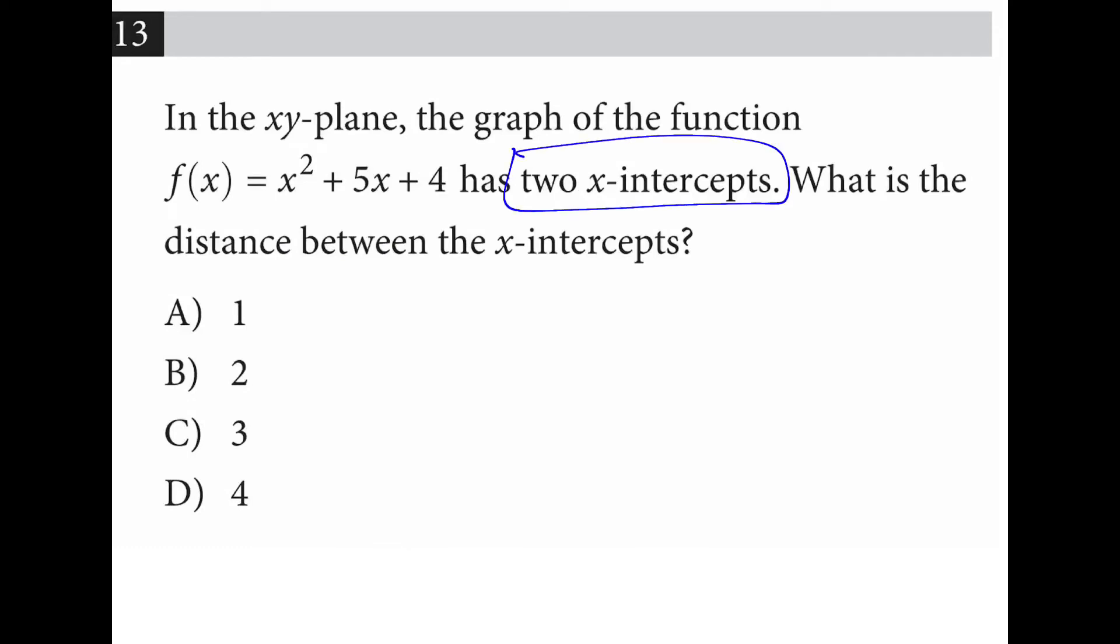Two intercepts is the same thing as just a solution. So if I look for factors of 4 that add up to 5, that's 4 and 1. So I have x plus 4 times x plus 1. So this is negative 4 and negative 1. And if I was to look on a plane, that's here's negative 1, here's negative 4. There's a distance of 3 between the intercepts.